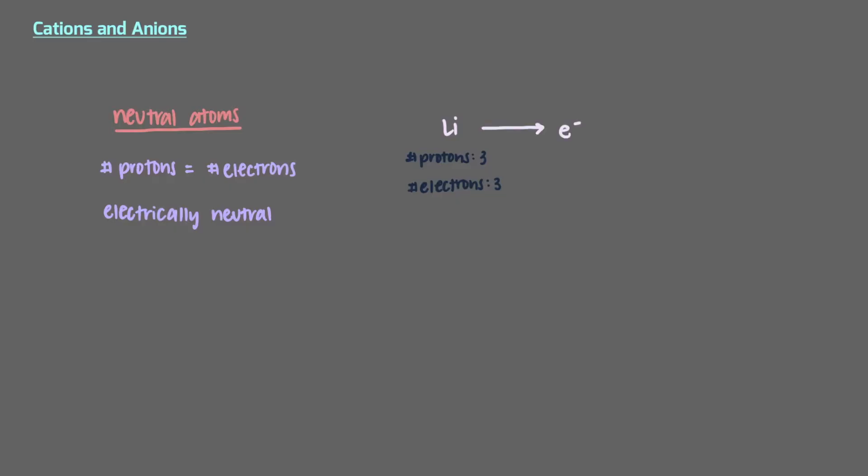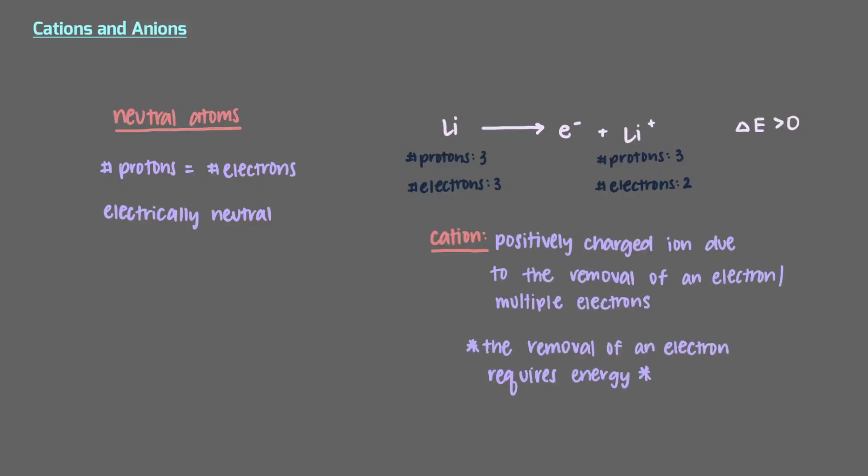When an atom loses an electron, or multiple electrons, it becomes positively charged and is called the cation. The removal of an electron requires energy.